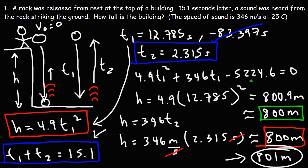So that's how you calculate the height of a building using physics. Drop a rock from the top, measure the total time until you hear the impact. You also need the temperature to determine the speed of sound. With the speed of sound and that total time, you can solve the system of equations using the quadratic formula to find the height. If you want to see how to do it using trigonometry with a different setup, check the links in the description below. Thanks for watching.